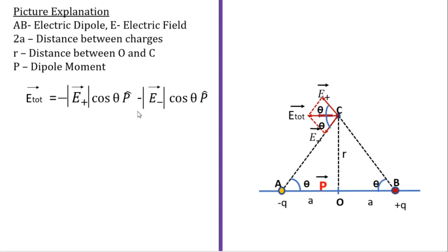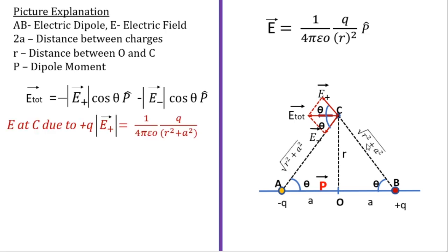The value for E is 1 over 4 pi epsilon naught times q over r squared. We write r squared plus a squared because in the triangle OBC, this is a right triangle where OC is R and OB is A. So BC equals root of r squared plus a squared by Pythagoras theorem. Squaring this, the root gets cancelled and we get r squared plus a squared.